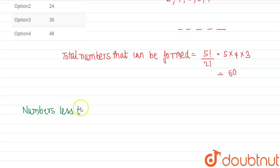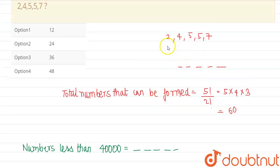So the numbers less than... see, we have five places and we need to form numbers less than 40,000, so they must start with the digit 2, otherwise they are either greater than 40,000.